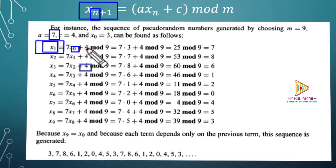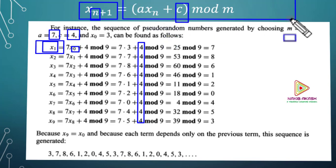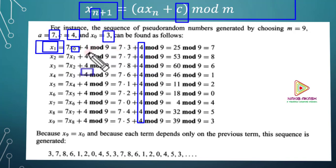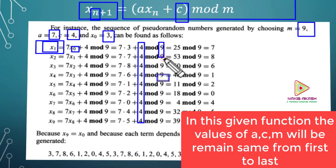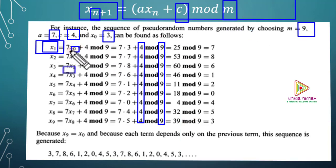So, 7 times x0, plus c — c means 4. This function: 7 into 3 (x-naught means 3), plus 4 mod m. So 7 times 3 is 21, plus 4 is 25. So 7 into x-naught plus 4 mod m — we see that x1 = 25 mod m.